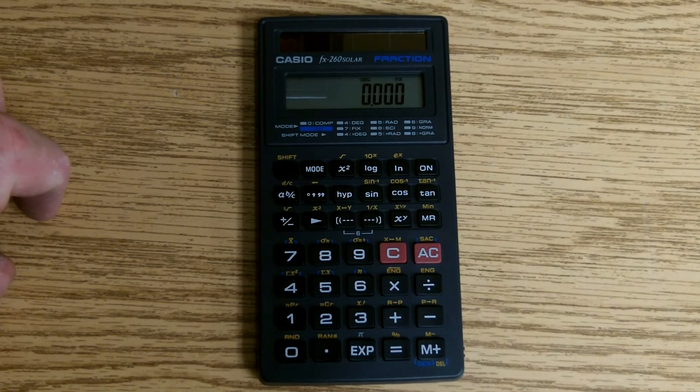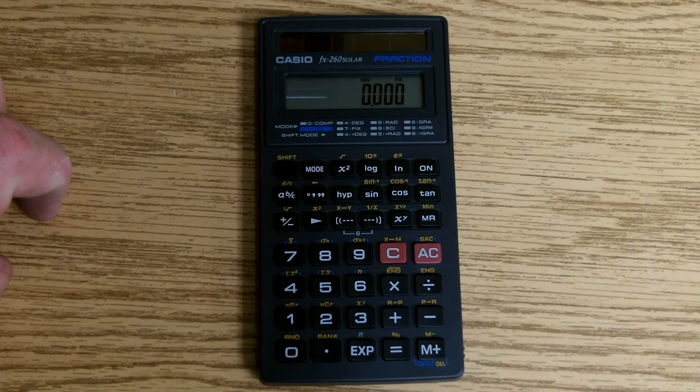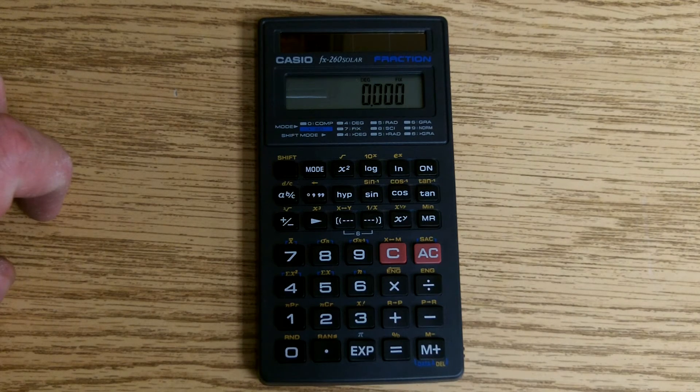Now, up on the top of the screen, you'll have the little letters F, I, X come up, telling you that there has been a decimal place fixed.